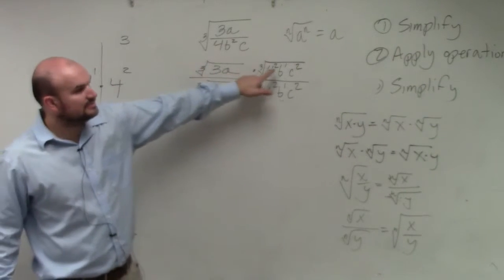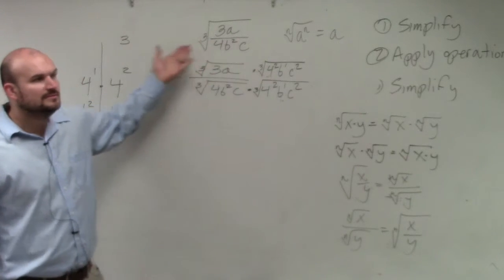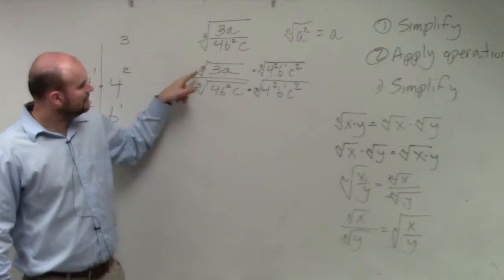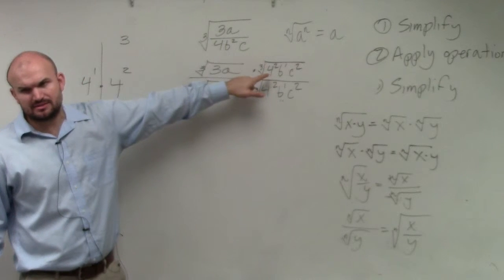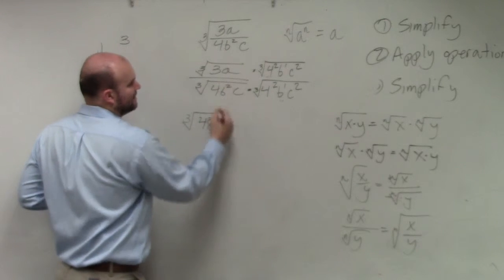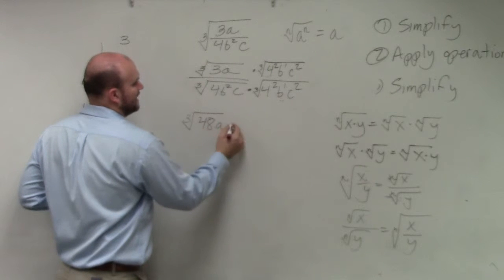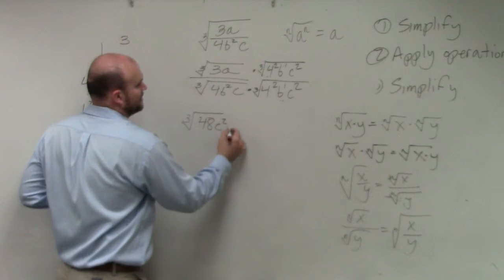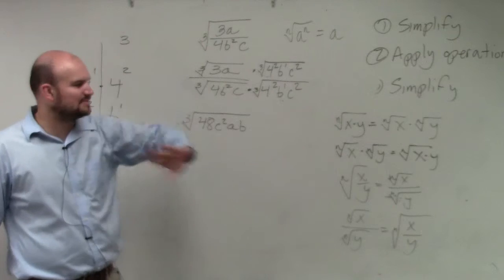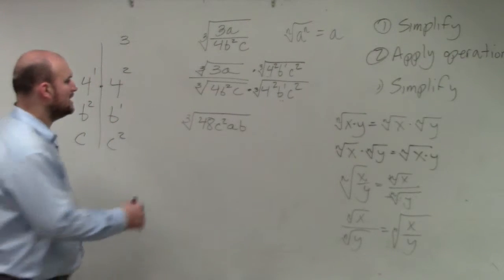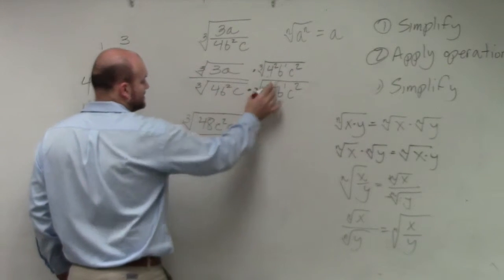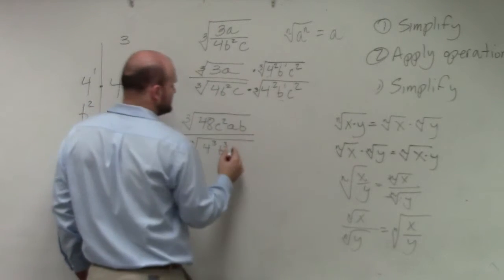Do these two have the same indexes? They have the same indexes, right? Now, a lot of times I don't like to actually multiply this out, except for up here. Really, 4 squared is just 16. 16 times 3 is 48. And then I have a, c squared, a, b — kind of like polynomials, highest power, have some kind of order to it. In the denominator, I have the cube root of 4 times 4 squared is 4 cubed. B squared times B is B cubed. And C times C squared is C cubed.